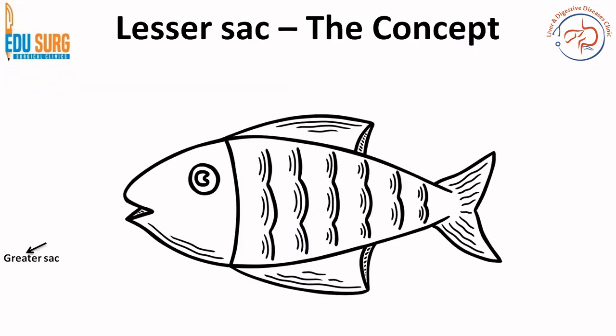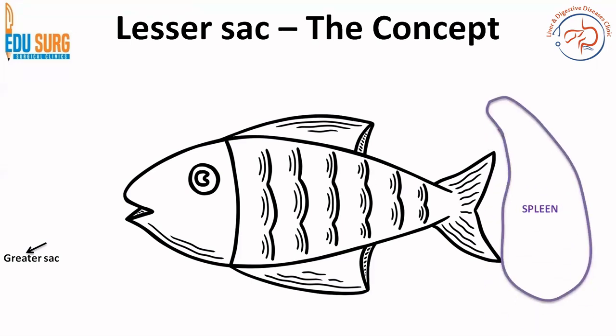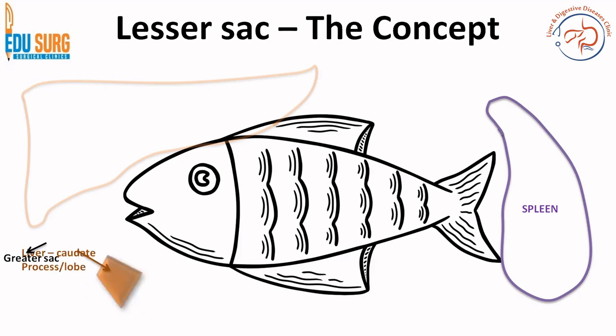The greater sac is outside. A helpful way to remember this is to imagine a fish, and the different parts of the fish will help you in understanding the lesser sac. Imagine that this fish is in the lesser sac. The spleen is on the left side of the fish and the liver is on the right side. You can now start recreating the abdomen by imagining this fish.